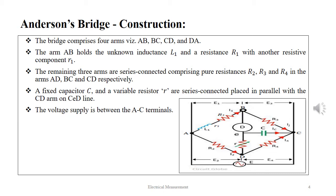A fixed capacitor C and a variable resistor r are series connected placed in parallel with the CD arm on the CD line. The voltage is supplied between the terminals A and C.